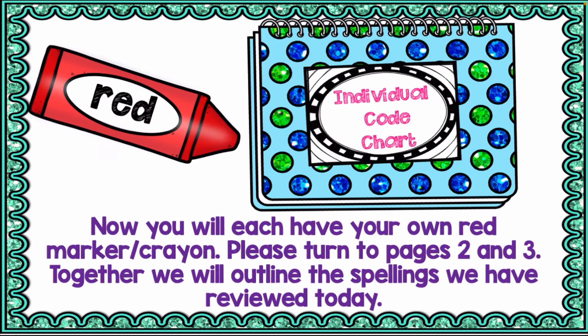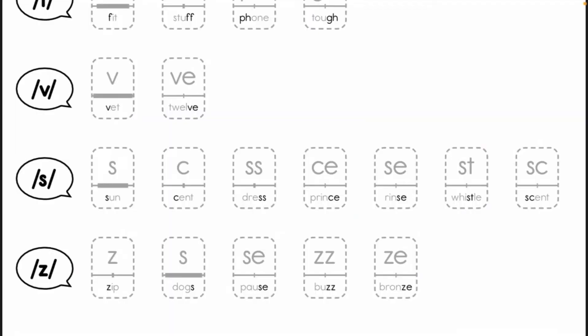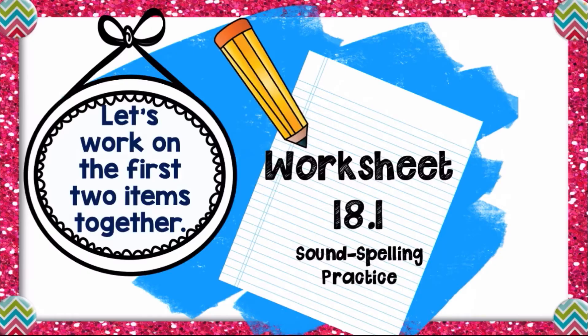Now let's look at page two of our consonant flip book to see the sounds. We have: son, sent, dress, prince, rinse, whistle, sent. Now open your worksheet 18.1 and complete the activity. You will see the 's' sound and the 'ch' sound, and you are going to circle the sounds according to its heading.